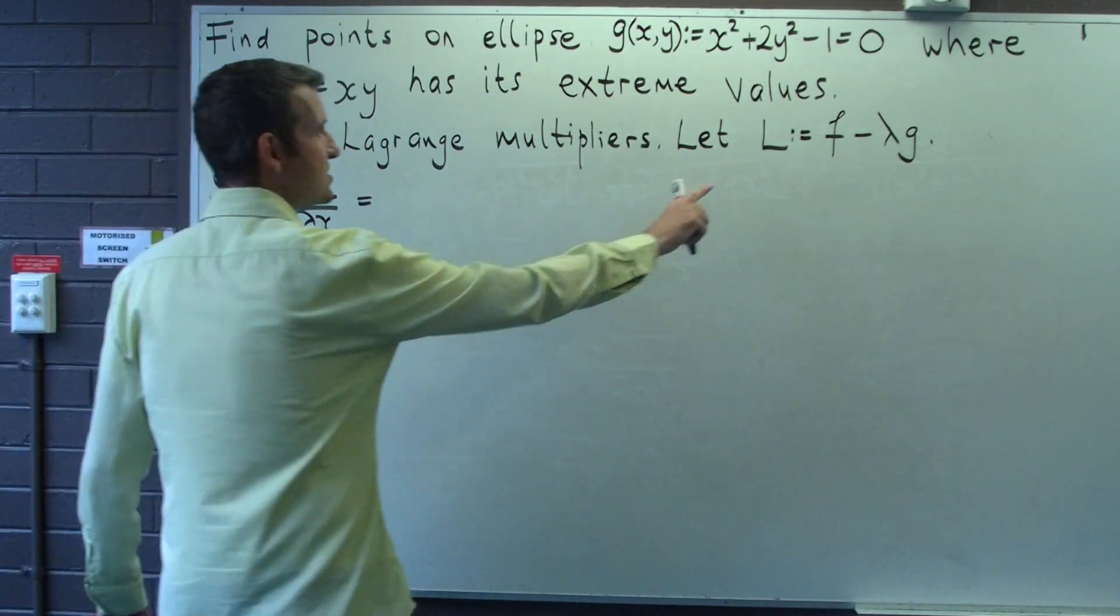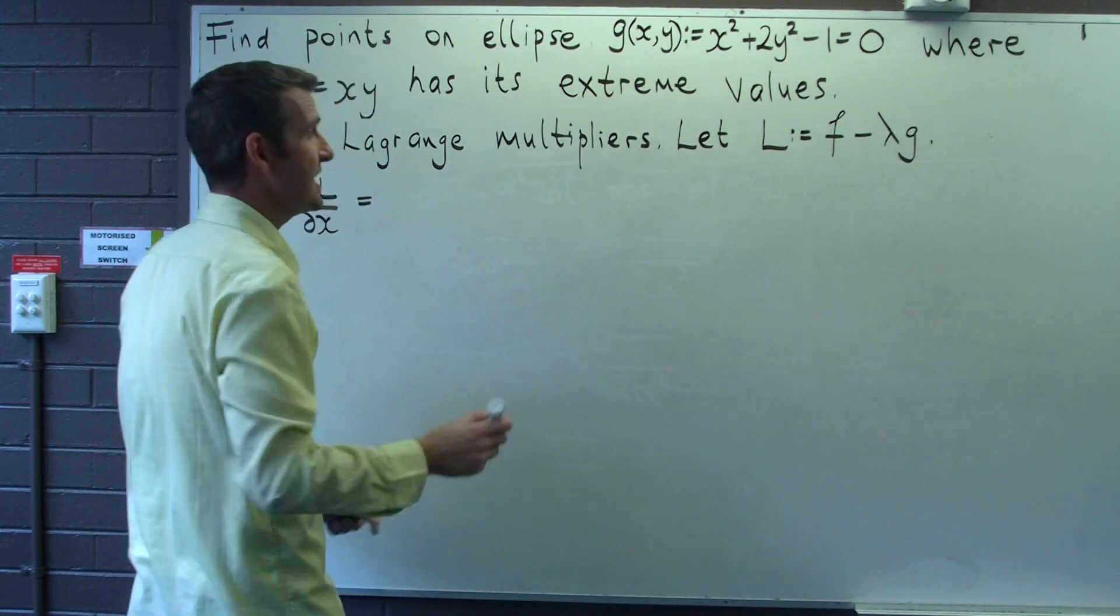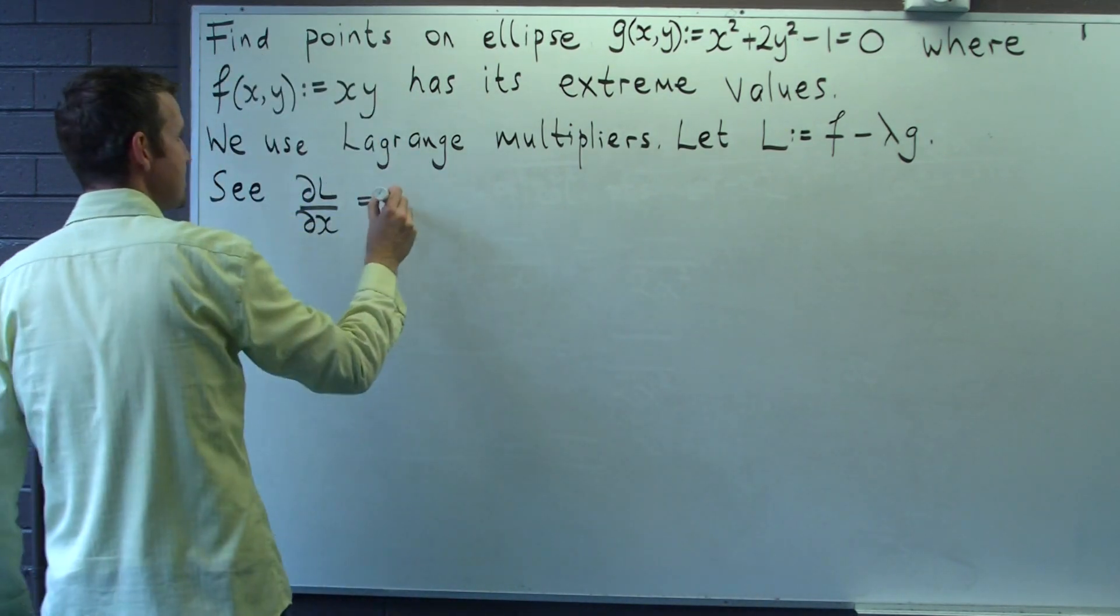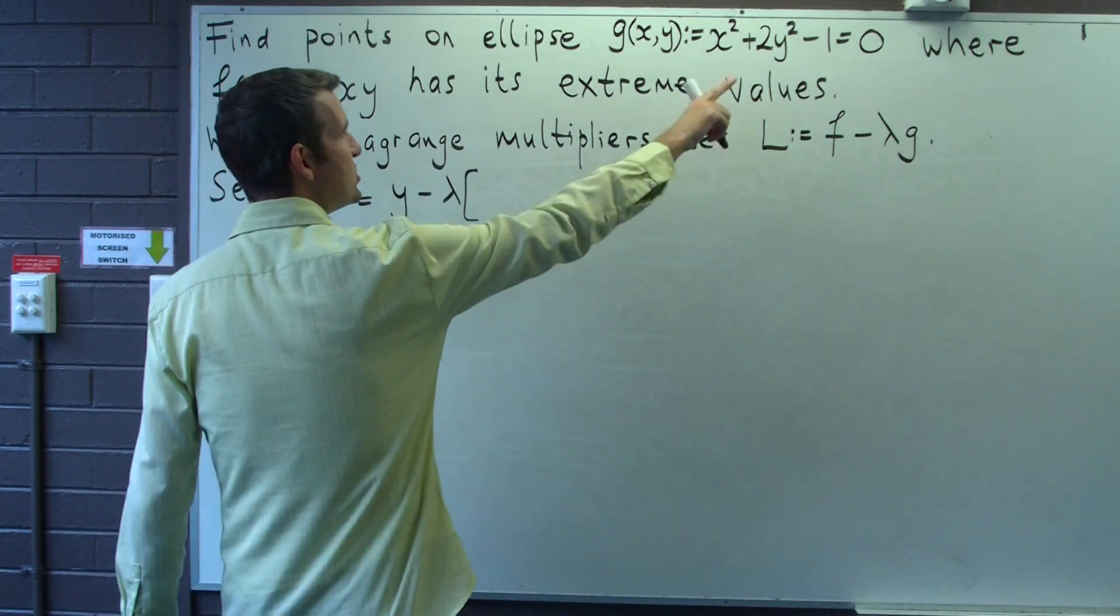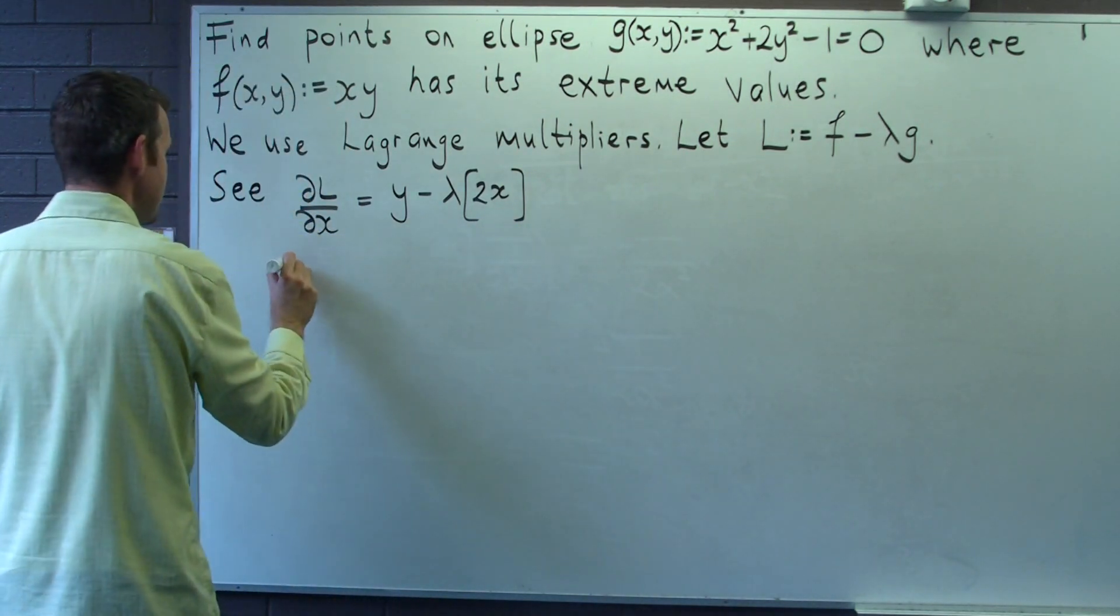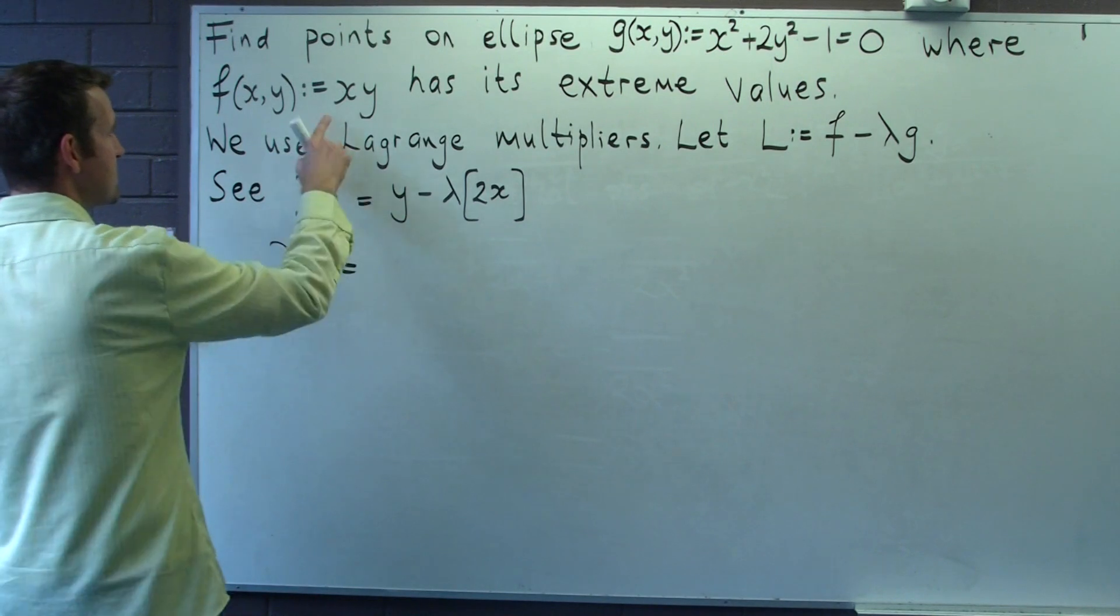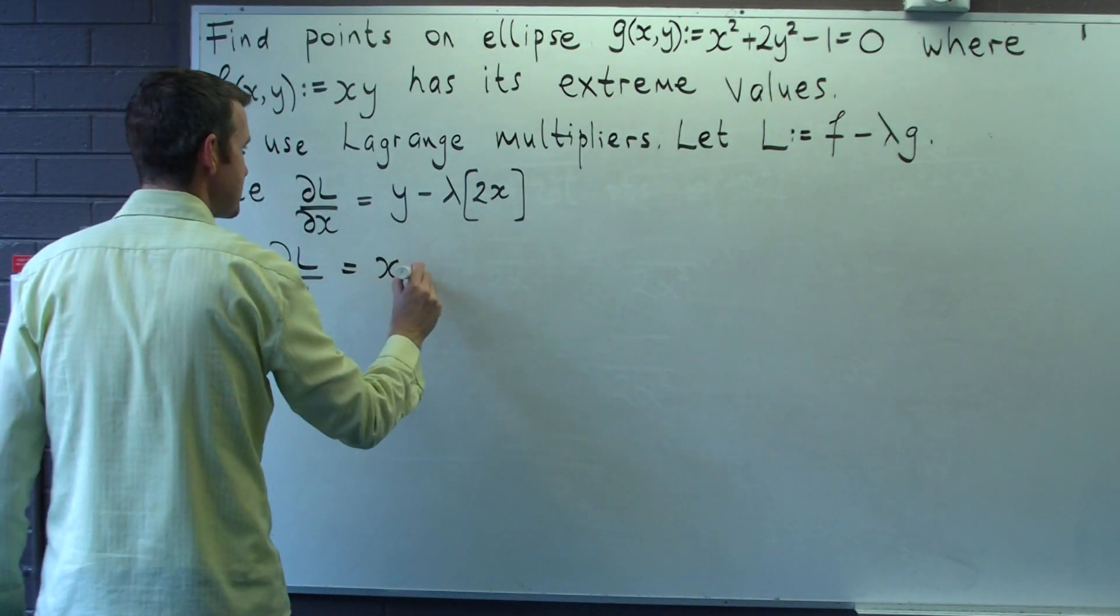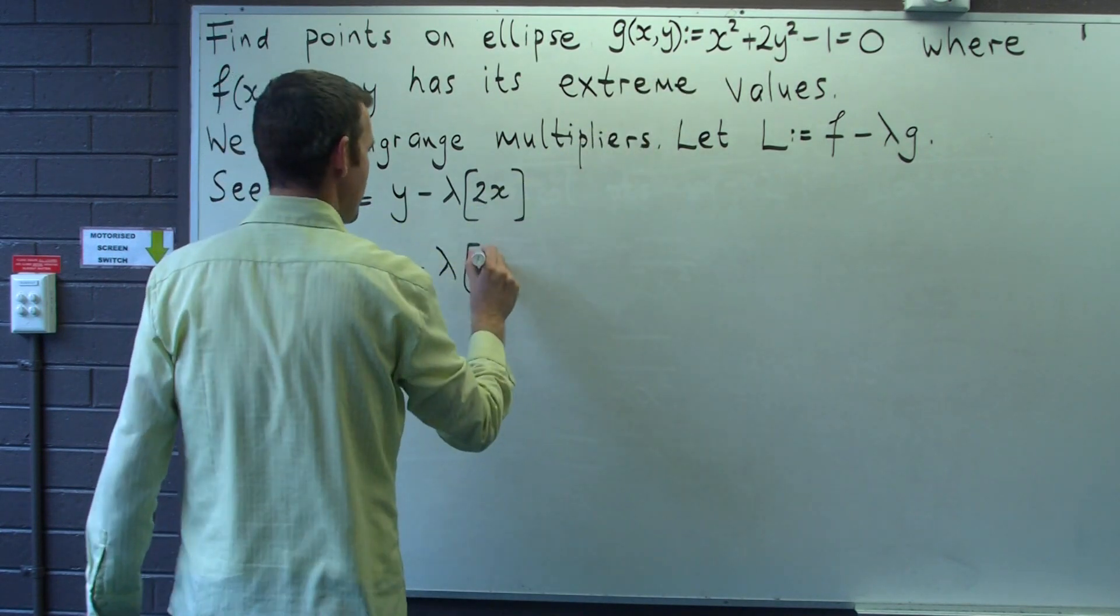So dL/dx is just going to be df/dx minus lambda dg/dx. So df/dx is going to be y, and dg/dx is 2x. Similarly, dL/dy is just going to be x minus lambda 4y.